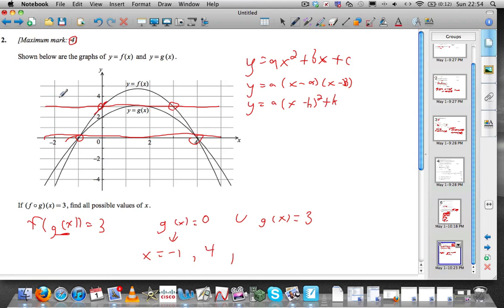When is g of x equal to three? We drew the line three, so g of x equals three here at one, and it also equals it here at two. Very difficult for a number two.